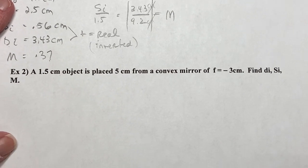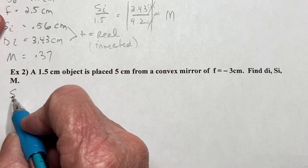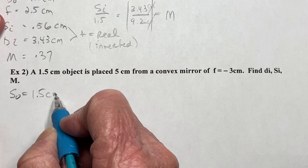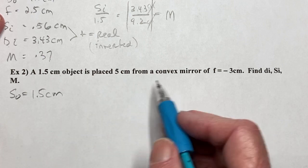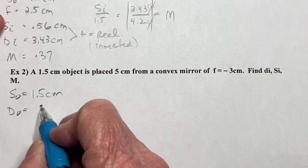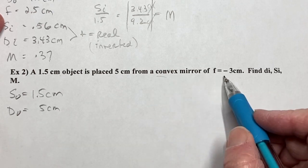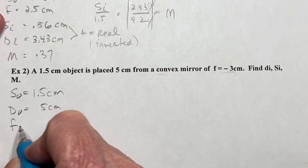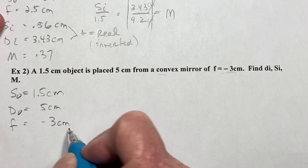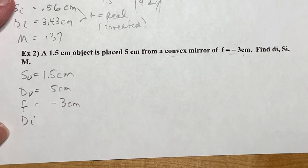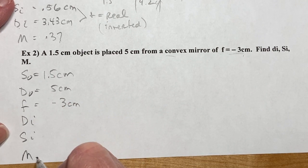All right, let's try this one. A 1.5, that's the size of the object, is 1.5 centimeters. It's placed 5 centimeters, so that's the object distance, 5 centimeters, from a convex mirror. Now, the negative is included here, so I'm okay, but sometimes you have to add that in. All right, so we're going to find di, si, and m. Same idea.